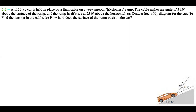A 1130 kilogram car is held in place by a light cable on a very smooth, frictionless ramp. The cable makes an angle of 31.0 degrees above the surface of the ramp, and the ramp itself rises at 25.0 degrees above the horizontal. The problem asks us to: (a) draw a free body diagram for the car, (b) find the tension in the cable, and (c) find how hard the surface of the ramp pushes on the car.